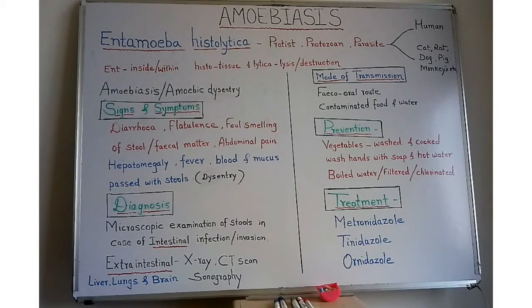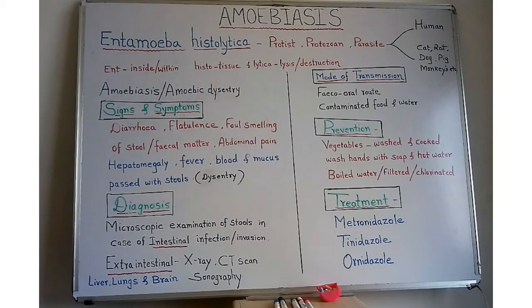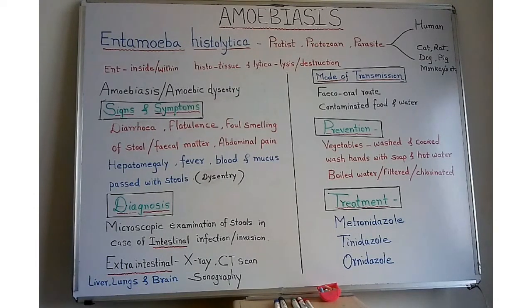Entamoeba histolytica not only infects humans but can also infect other animals such as cats, rats, dogs, pigs, and monkeys, but the most common host is human beings. The meaning of 'Ent amoeba' is that this amoeba resides inside or within the body of an organism. 'Histo' means tissues and 'lytica' means lysis or destruction, so in amoebiasis destruction of tissues takes place.